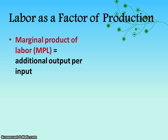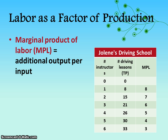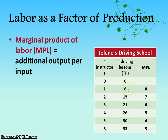The marginal product of labor is the additional output per input — every time we add another worker, how many more lessons do they help us produce? That's calculated in the right-hand column. When we add one more laborer, the first worker can produce eight lessons instead of zero, so the marginal product is eight. When we add the second worker, the additional output is seven — eight plus seven is 15 total output. This is review; we already know how to calculate this.